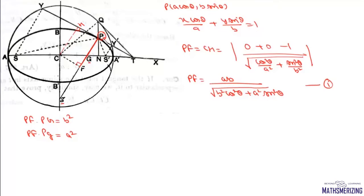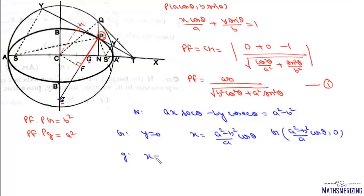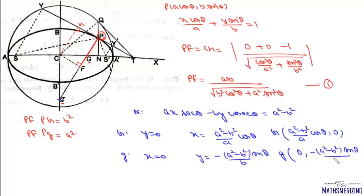The equation of the normal at P is ax secθ − by cosecθ = a² − b². For point G (intersection with major axis), put y = 0 to get x = (a² − b²) cosθ / a, so G = ((a² − b²) cosθ / a, 0). For point g (intersection with minor axis), put x = 0 to get y = −(a² − b²) sinθ / b, so g = (0, −(a² − b²) sinθ / b).